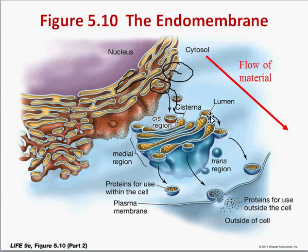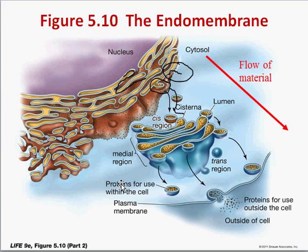Inside the Golgi, those proteins can be further modified, concentrated, and packaged. From here they can move out of the cell. These vesicles travel from the Golgi to the plasma membrane, where they fuse and release proteins outside the cell for secretion — these could be chemical signals, enzymes, or other proteins released into the environment. Alternatively, vesicles may have another destination inside the cell. A small subset actually form lysosomes, which have digestive enzymes inside for phagocytosis.